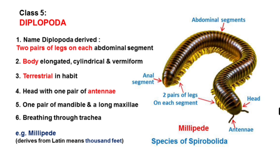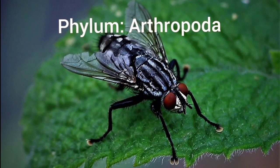Class 5 is Diplopoda. Animals belonging to Diplopoda have two pairs of legs on each abdominal segment, and from this feature the name Diplopoda is derived. The body is elongated, cylindrical, and vermiform. They are terrestrial in habit. The head has one pair of antennae, one pair of mandibles, and a fused maxilla. Breathing occurs through trachea. The example is the millipede — a name derived from Latin meaning 'thousand feet.'